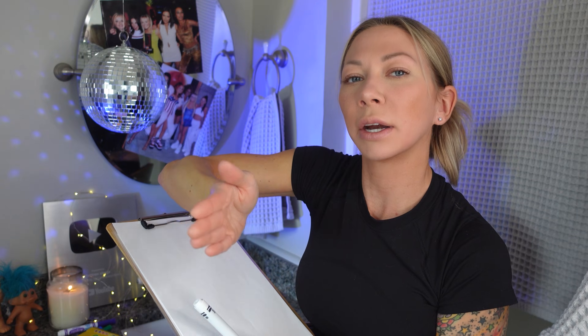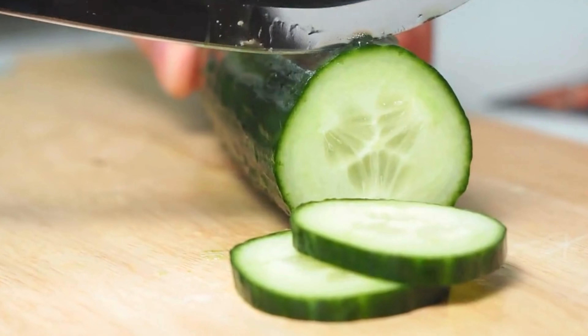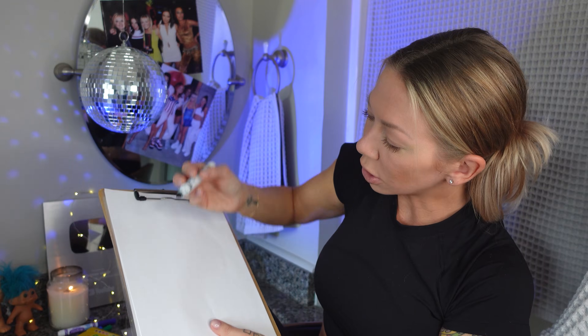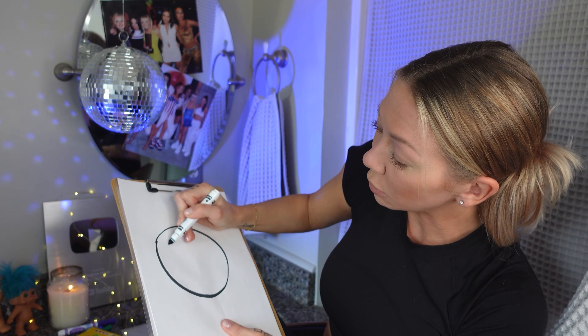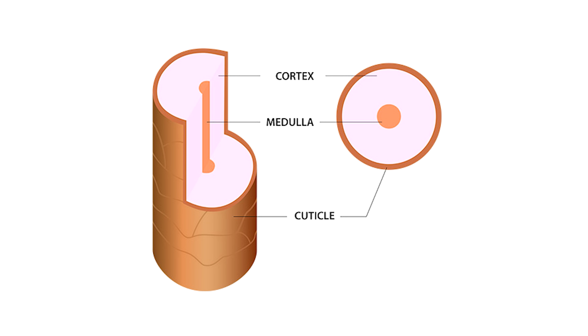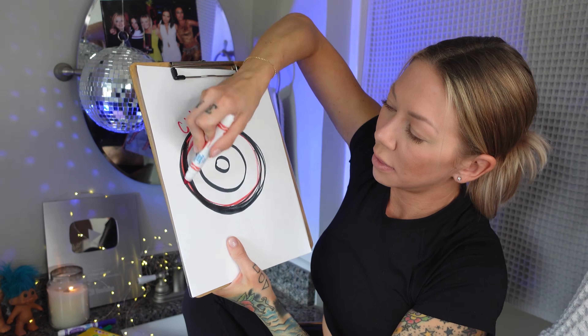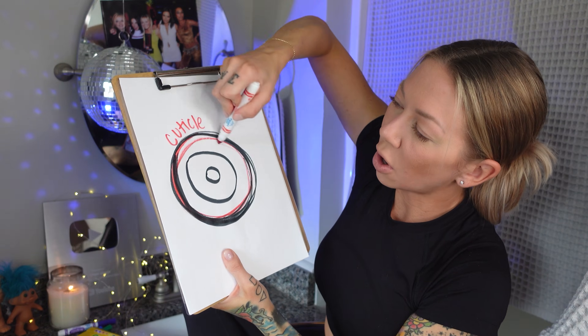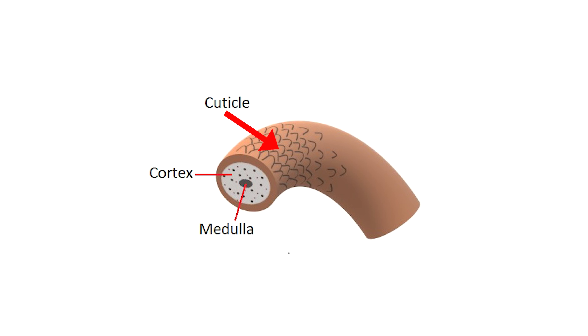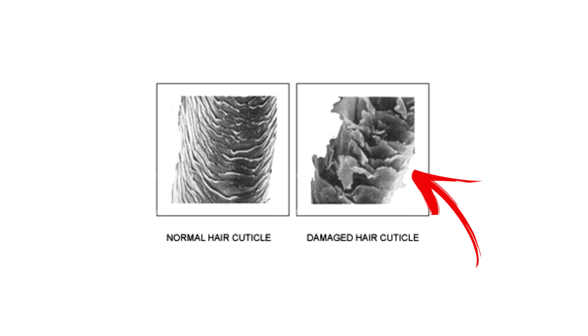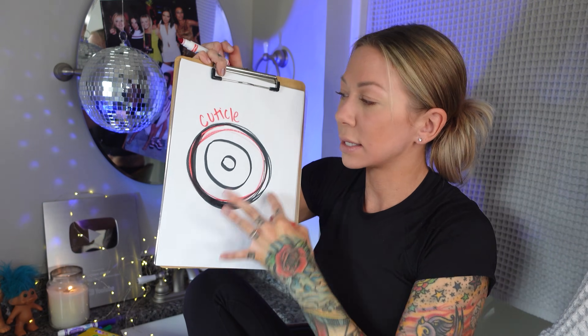If we took a piece of hair out of our head, cut it in half — just like you would cut a cucumber in half — and looked at it under a microscope, we would see that it has three major components. This outer layer is called the cuticle. The cuticle makes up 20% of the hair strength. When you have split ends or damaged hair, it's all happening in this layer.